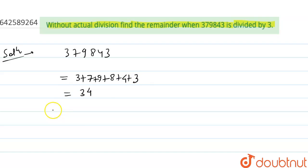Now we need to find the remainder without actual division. What we can do is, 34 can be written as 3 × 11 + 1.